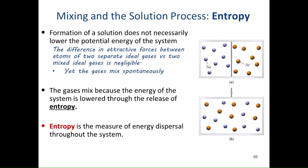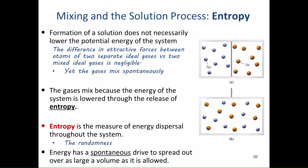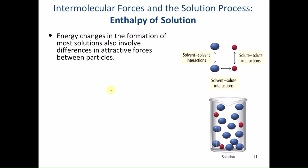Entropy is the measure of energy dispersal throughout the system — often referred to as the randomness or disorder of the system. Energy has a spontaneous drive to spread out over as large a volume as allowed. The neon and argon spread out to fill the entire box, limited only by the container.